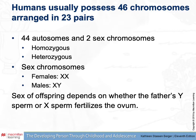Healthy human beings usually possess 46 chromosomes arranged in 23 pairs. 44 of those chromosomes are referred to as autosomes, meaning they are carrying genes that code for a variety of things but have nothing to do with the determination of the sex of the offspring. In an autosomal pair, they can be homozygous — meaning they are the same as each other — or they can be heterozygous, meaning they are different from each other.